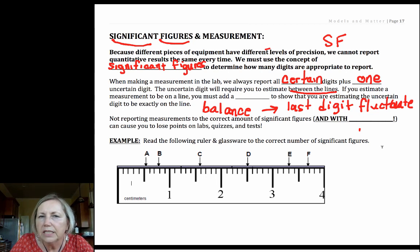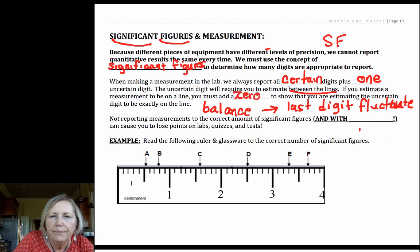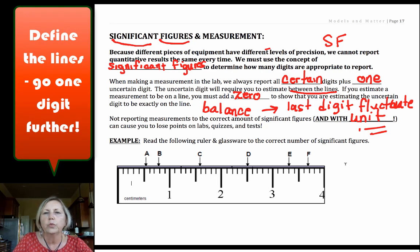Now what if it's on the line? If you're estimating between the lines, what if you're estimating that it's on the line? You're still estimating that it's right on the line and so you have to add a zero. We always want to measure and report numbers to the correct significant figures with units.